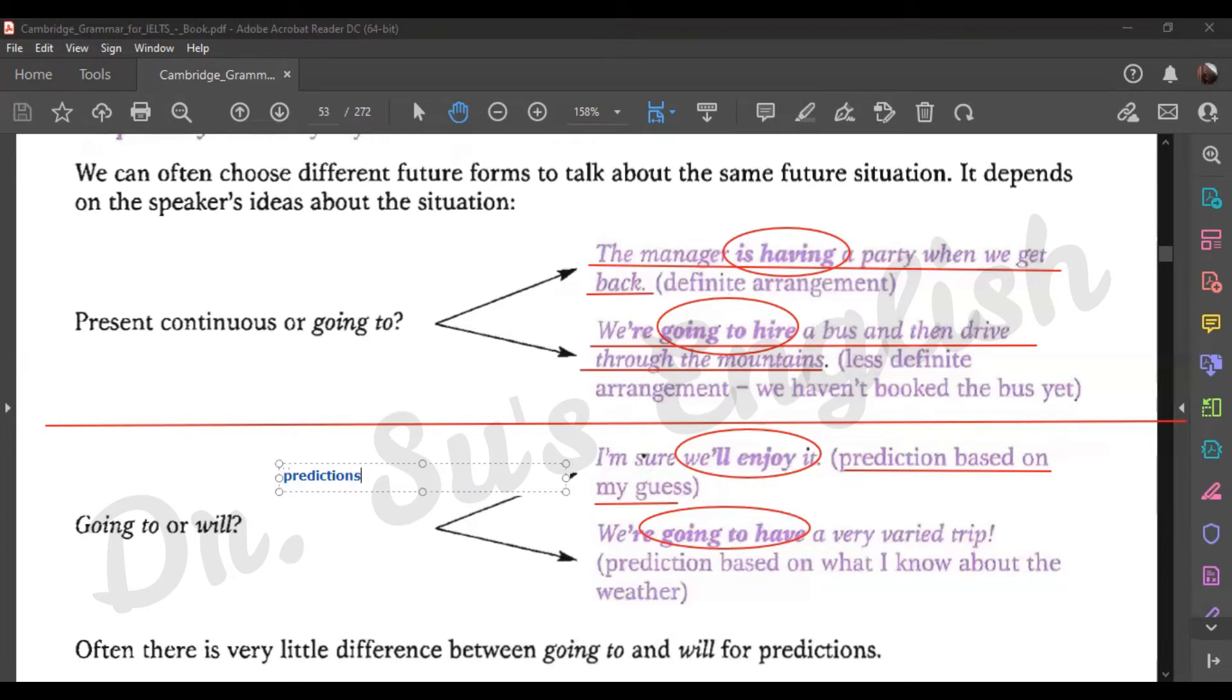Going to has a high likelihood prediction, and there are arrangements. Present continuous means definite arrangement. Going to means less definite arrangement.